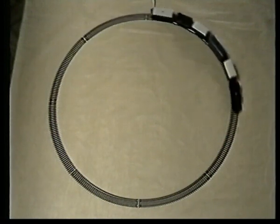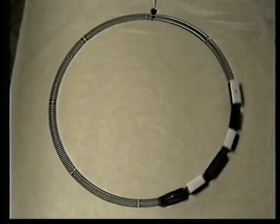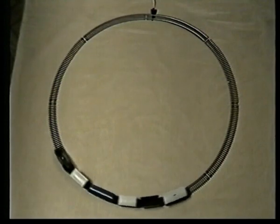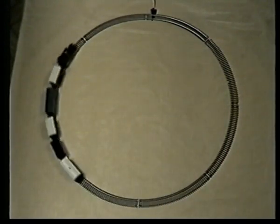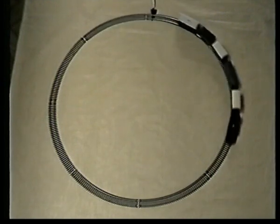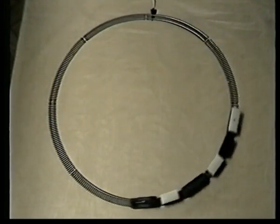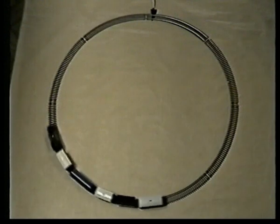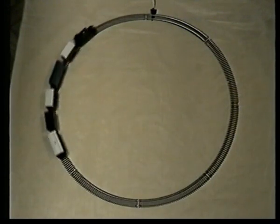An object moving in a circle at constant speed changes direction. Therefore, its velocity changes. Its acceleration is towards the center or centripetal and must be caused by an overall centripetal force if circular motion is to be maintained.